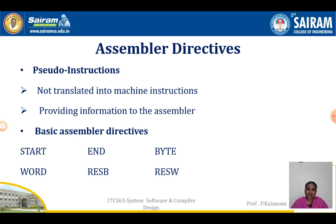Examples of assembler directives are: START, END, RESB (reserve byte), RESW (reserve word), BYTE, WORD, and so on. For example, START is an assembler directive — it instructs the assembler to start the conversion process. END is an assembler directive — it instructs the assembler to end the process. These directives give instructions to the assembler.